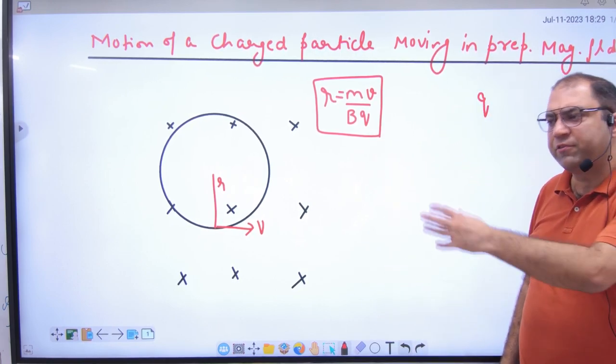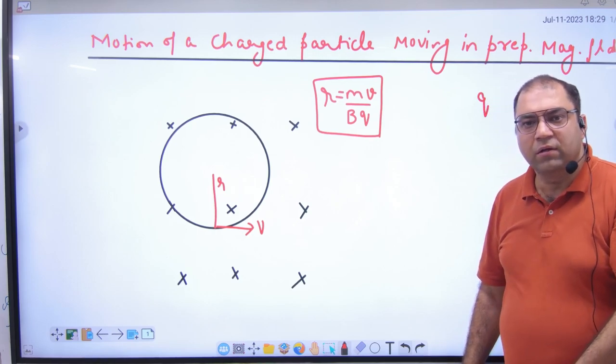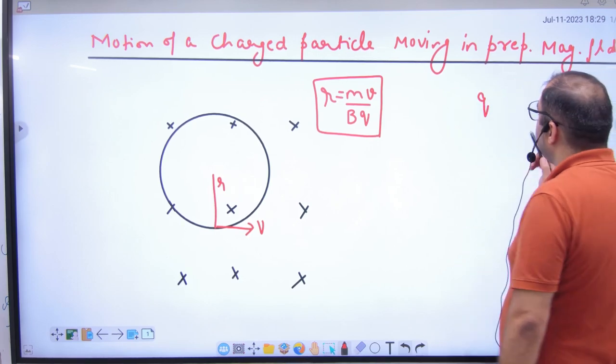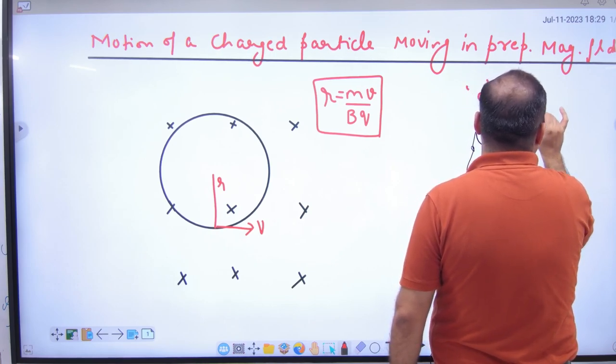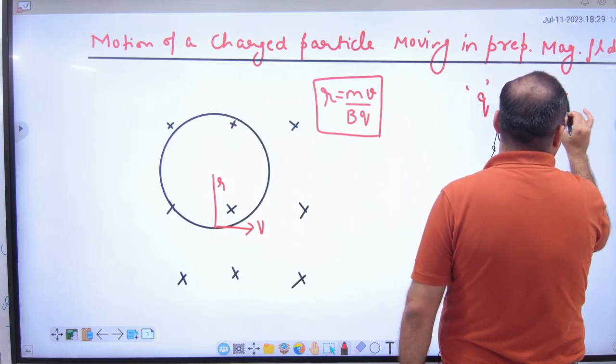If you give velocity and ask for the radius, then the answer will come. But instead of giving velocity, suppose you have a charged particle q moving with kinetic energy K.